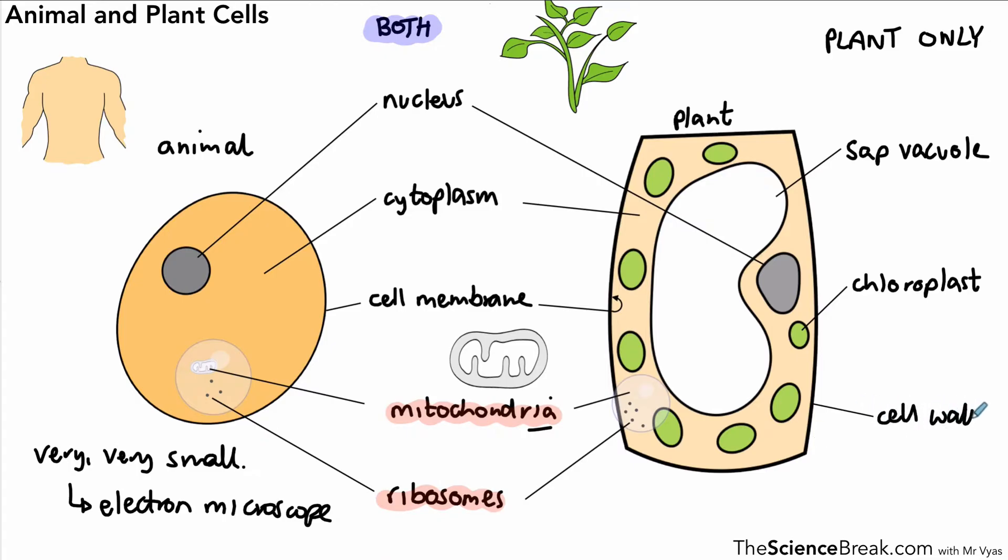Don't mix that up with the cell membrane, which is something slightly different. So those are the eight parts you need to know—you should be very familiar with them. The next thing we need to be able to do is label the function of those parts.